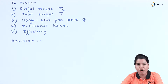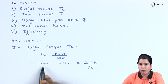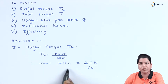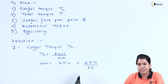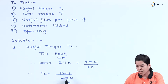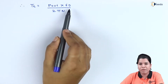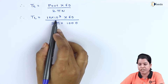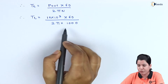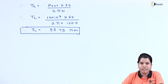First, we have to find the useful torque T_L. The formula is T_L = P_output / omega_m, where omega_m = 2 * pi * N / 60. Rearranging, T_L = P_output * 60 / (2 * pi * N). Substituting values: T_L = (10 × 10³ × 60) / (2 * pi * 1000). Solving, T_L = 95.49 N·m.